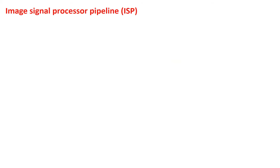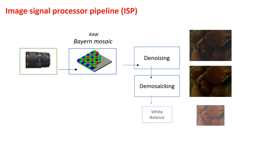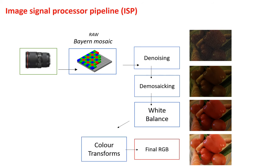An image signal processor pipeline is a software system that sequentially applies a number of low-level and global image processing operations to the raw data of a camera sensor. These operations may refer to denoising, demosaicing, white balance, or color transformations.